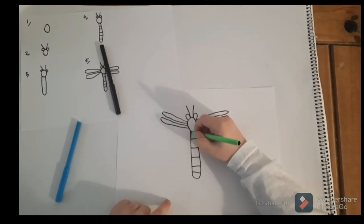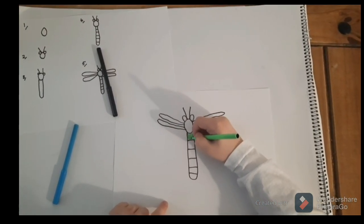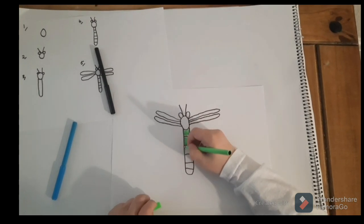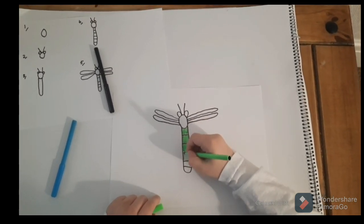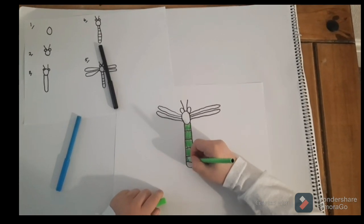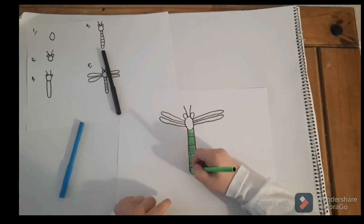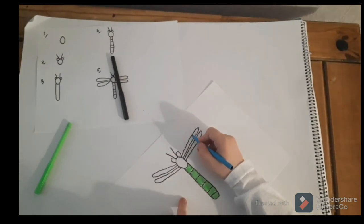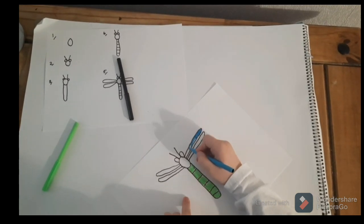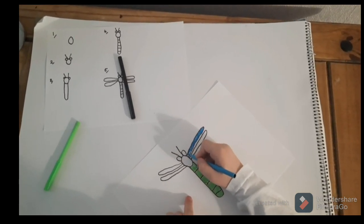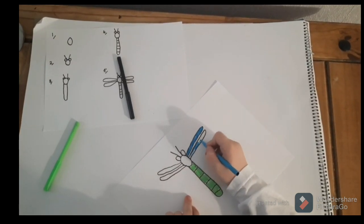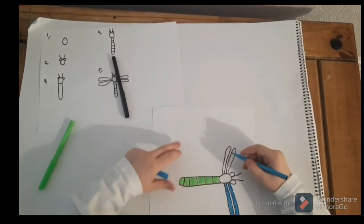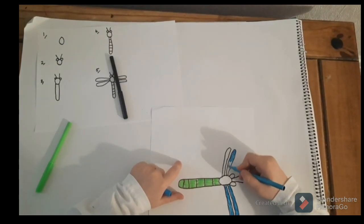I'm going to color it in. Remember, you can always pause it if we're too fast. Okay, so I'm going to do the body green. Again, you can use whatever colors you want. And then, the wings are going to be blue. Dragonflies always live in lakes. That's why I'm doing it blue. Like some of the lake has rubbed off on the wings, making the wings blue. Okay, and that's one part of the wings done. Now for the other set. And now for the other wings.